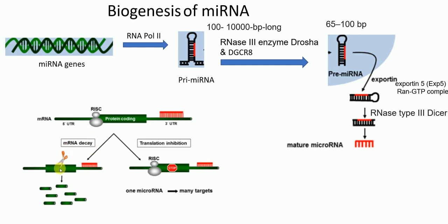If the guide RNA has only partial complementarity to the target mRNA, then translation inhibition will occur instead. The RISC complex inhibits the ribosomal subunit from binding with the target mRNA, so that further protein synthesis cannot occur.